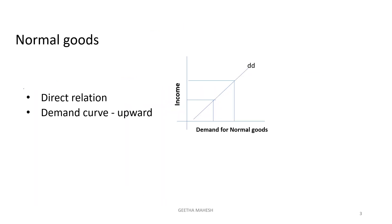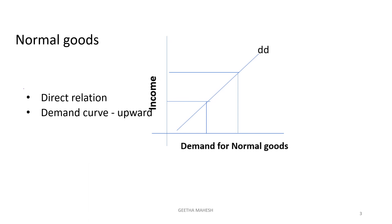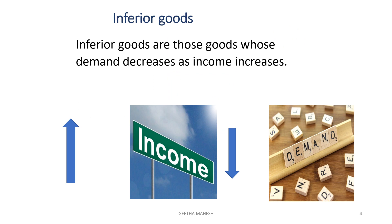Dear students, on the x-axis demand for normal goods is measured and on the y-axis income of the consumer is measured. There is a direct relationship between income of the consumer and demand for normal goods, so the demand curve has an upward slope — meaning the demand curve for normal goods has a positive slope. As income of the consumer increases, demand for normal goods also increases.